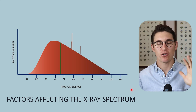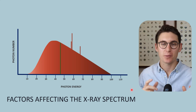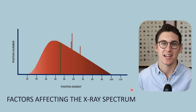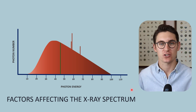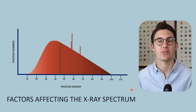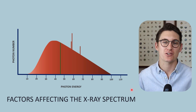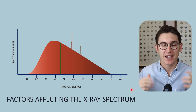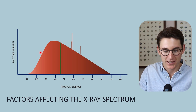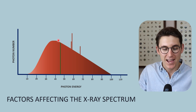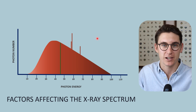In the last talk I mentioned that there are five main factors that we can manipulate in order to change the x-ray spectrum. Changing those five factors will either have an effect on our x-ray beam quantity or our x-ray beam quality. The x-ray beam quantity is represented by the red here — the area under the graph, the number of photons within our x-ray beam.